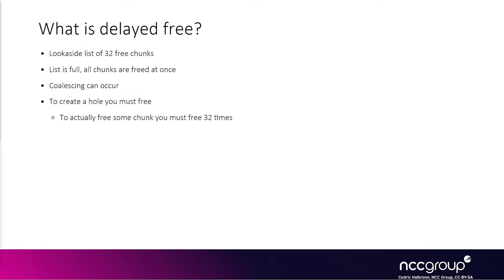In this video we're going to talk about the delayed free mechanism, which is a mitigation in the kernel, and how to bypass it. There is a special list of free chunks called the look aside list — a cache of chunks that have recently been requested to be freed. These chunks aren't actually freed in the real sense. The kernel heap algorithm checks this look aside list first when a new allocation is requested, and may pick a candidate from it instead of using a regular free chunk.